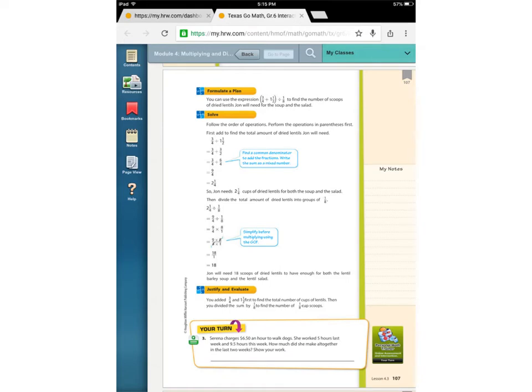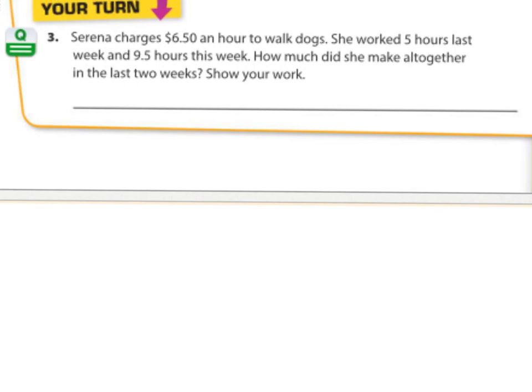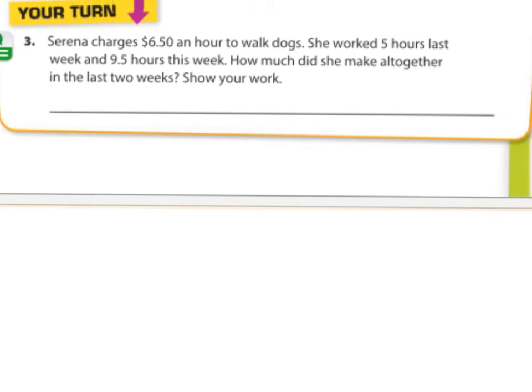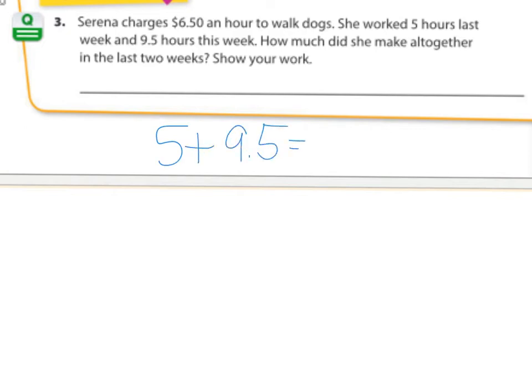Okay, so let's focus on this question down here. Serena charges $6.50 an hour to walk dogs. So every hour she gets paid $6.50 for walking dogs. She worked five hours last week and nine and a half hours this week. So how much did she make altogether in the last two weeks? Well, the first thing that we need to do is find out how many hours she worked. So five hours plus nine and a half hours is 14 and a half hours. And then for each hour she got paid $6.50. So each hour is getting paid that same amount. That's 14 and a half hours at $6.50 an hour. So you're multiplying 14 and a half times $6.50.